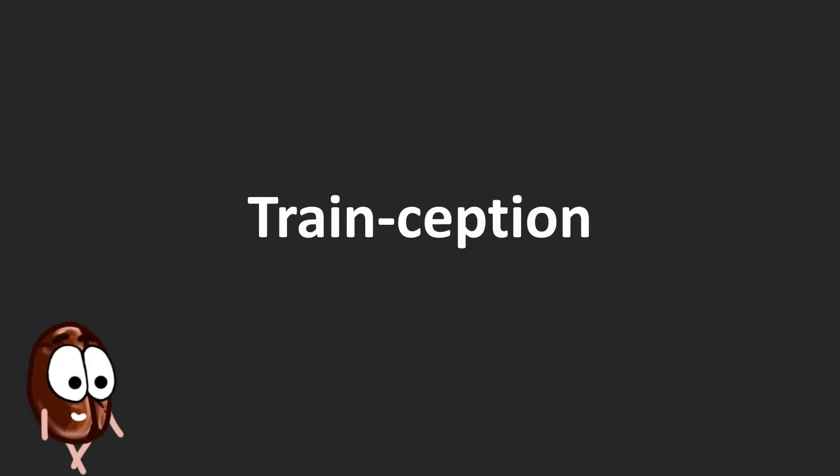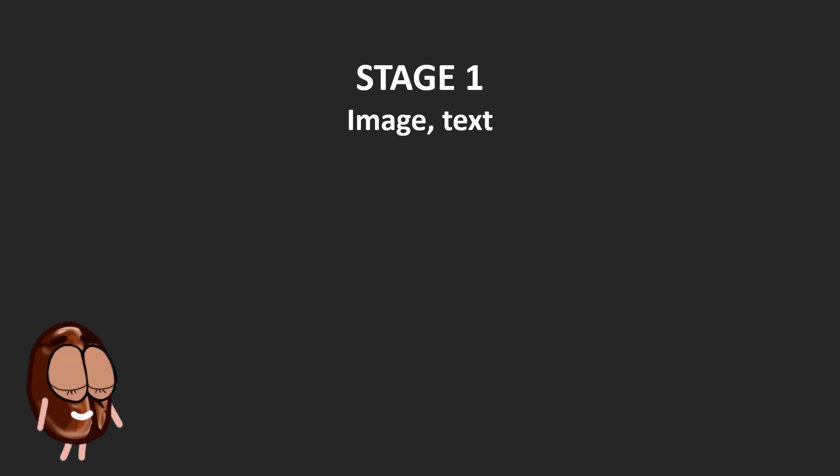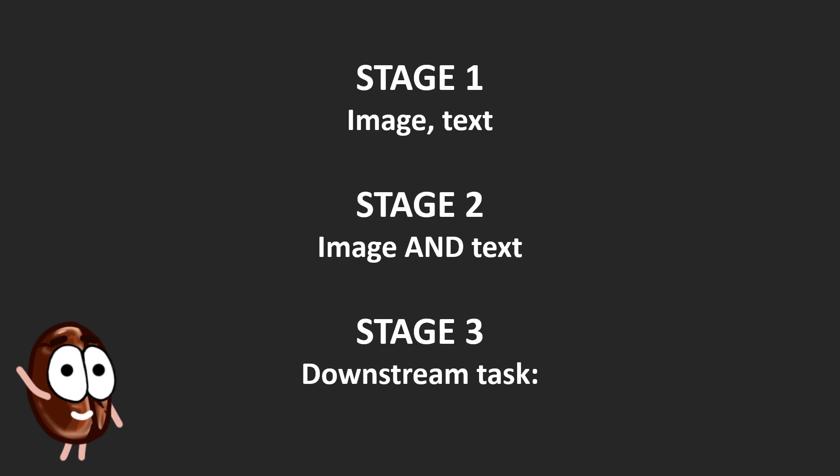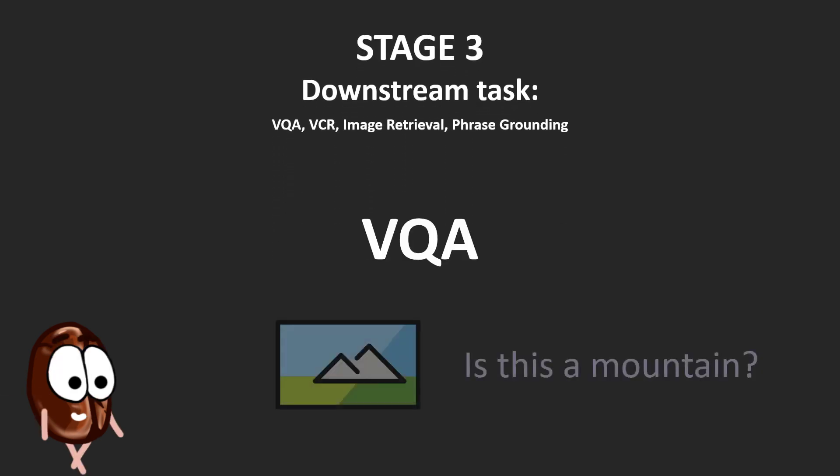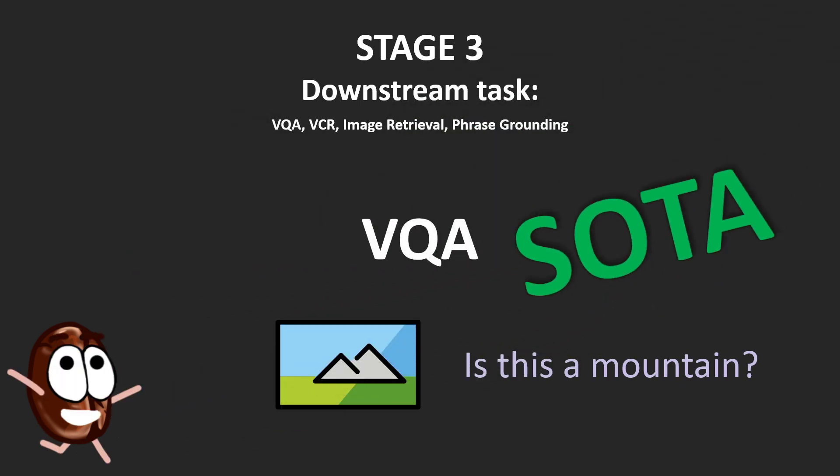And we are already at the training stage number 3, where the same model that at stage 1 learned to process images and text separately, at stage 2 combines them and understands the relations between text and image, and is now ready to be trained to solve a task involving both textual and visual modalities. Such tasks are, for example, visual question and answering, where the model is given an image and a question, and it has to provide the right answer to the question, based on the image. Wilbert not only beat the state of the art at the time of publication on this task, but by a large margin.